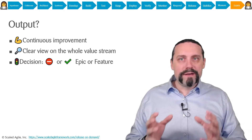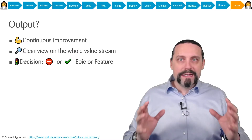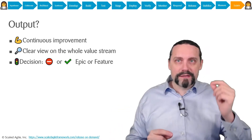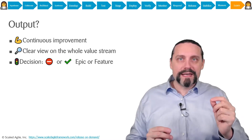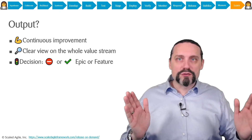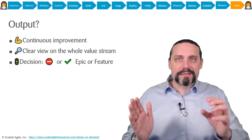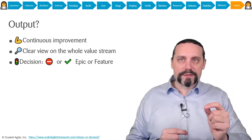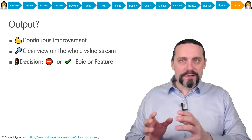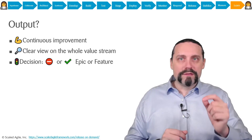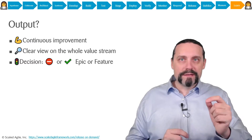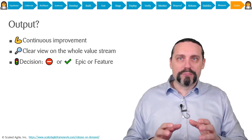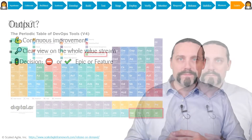The output of the learn step is that we continuously improve and get better every iteration or sprint. We also gain a very clear view of the whole value stream, which helps the entire team — both business and IT — because suddenly everyone understands how value flows through the value stream and where exactly the bottlenecks are. The learn step is where we make the hard decisions: based on our measurements, we have all the information needed to decide whether to invest more into an epic or feature, or to stop investing in it.